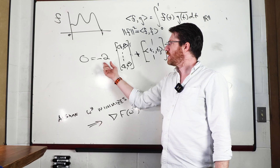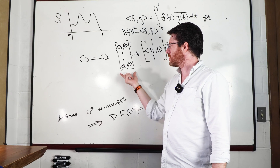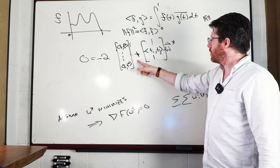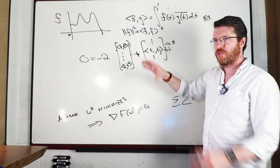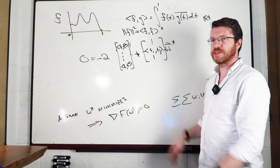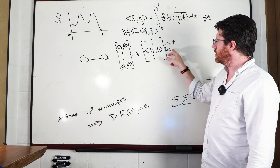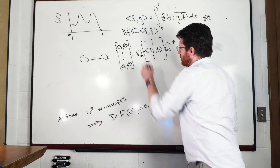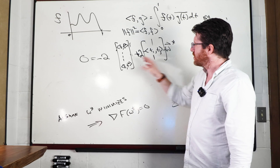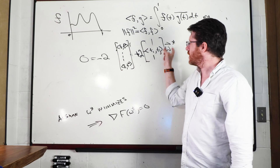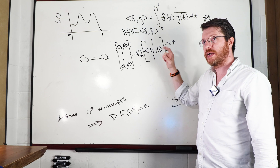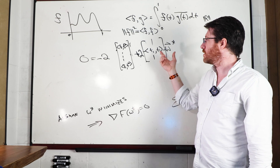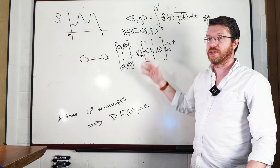Taking the gradient gives minus two times the vector of f inner-producted with all our basis functions, plus two times the gram matrix — the matrix of all pairwise inner products — times w*. We move things over, cancel the twos, and invert the gram matrix. The gram matrix is invertible as long as the basis functions are linearly independent.